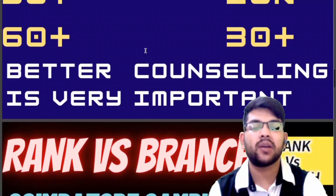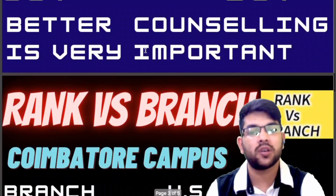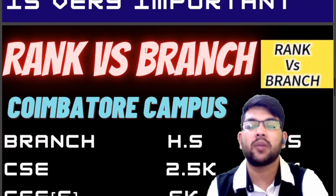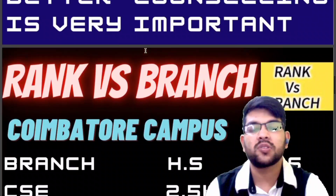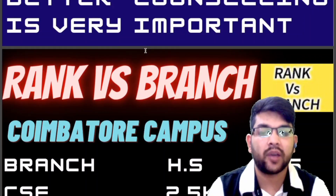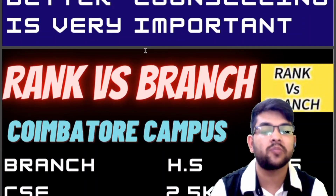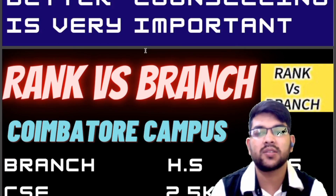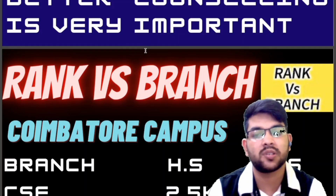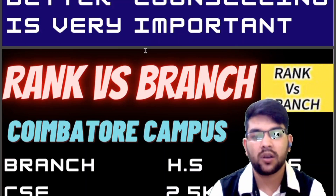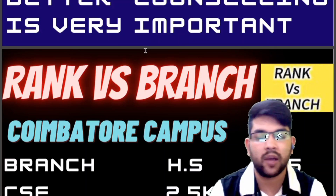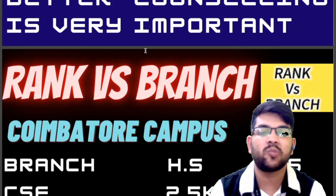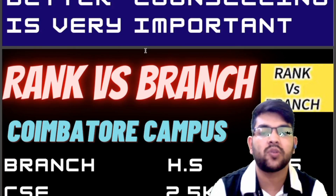Now let's talk about rank versus branch for each campus. For the Coimbatore main campus, which is the dream campus for most students: please note that Amrita has different types of reservation. For home-state students, 50% of seats are reserved according to current information, and the remaining 50% are available for students from other states.